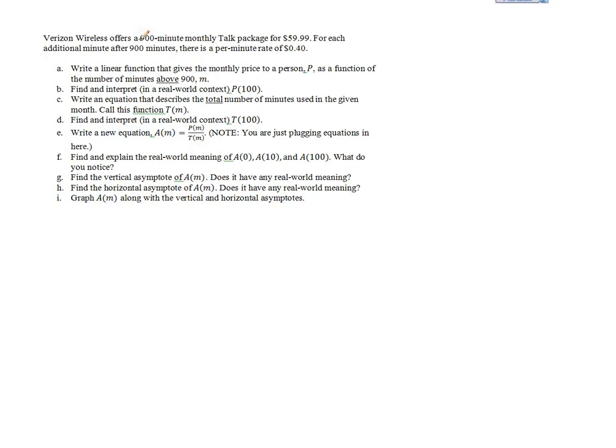We're looking at a Verizon wireless plan that has 900 monthly minutes for $59.99. If you go above 900 minutes, it's going to charge you $0.40 extra. So we want to write a linear function that gives the monthly price to a person as a function of the number of minutes used above 900.